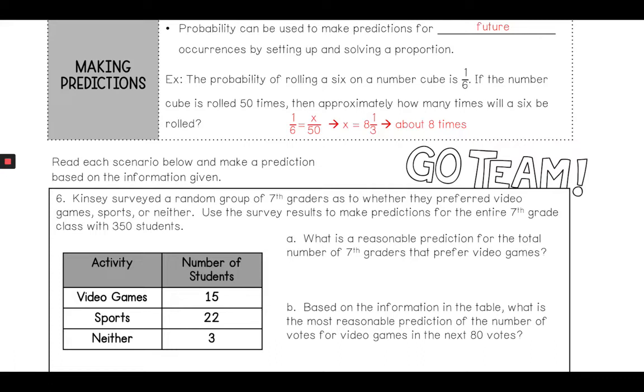Number six: We're going to read the scenario and make a prediction based on the information given. Kinsley surveys a random group of seventh graders as to whether they prefer video games, sports, or neither. Use the survey results to make predictions for the entire seventh grade class with 350 students. So what's a reasonable prediction for the total number of seventh graders that prefer video games?